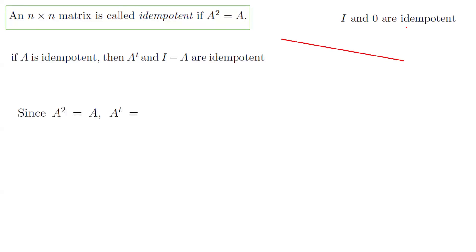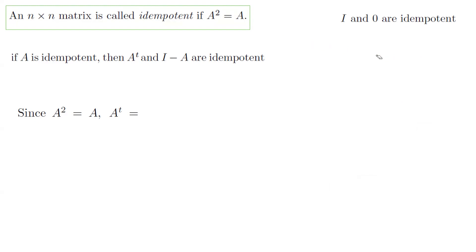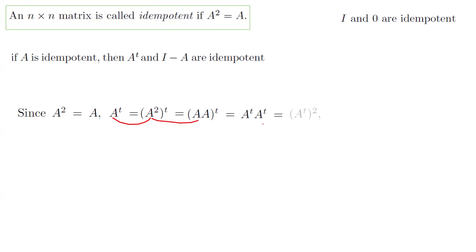Let us begin. Since A is idempotent, it means that A times A equals A. If you form the transpose of the matrix, instead of A you can replace it with A times A, and then take the transpose. It becomes the transpose of (A times A), which equals A transpose times A transpose, since for a product of two matrices the transpose reverses the order — but here the same matrix is repeated, so order doesn't matter.